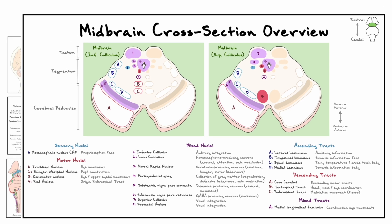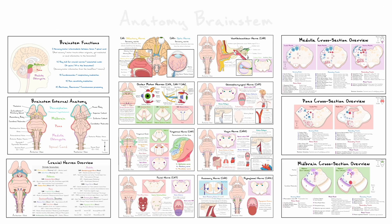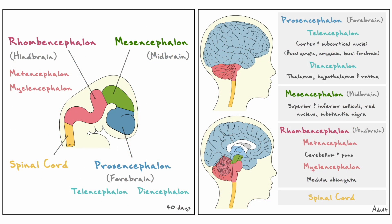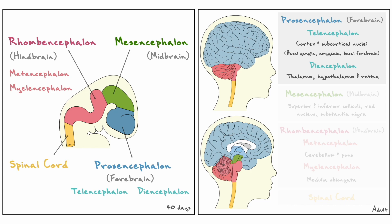This concludes our discussion on the brainstem, and this means we are ready to move on to the next portion of the central nervous system. Based on the embryological divisions, the next section that we will cover corresponds to the prosencephalon, or forebrain, here in blue. Throughout this video, I'll refer to the forebrain or prosencephalon as simply the brain, so make sure not to get confused by that.